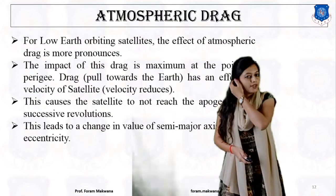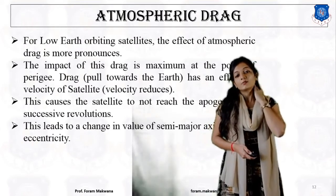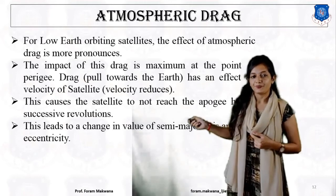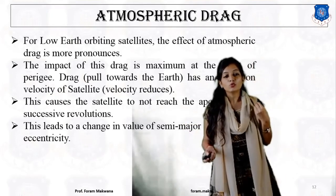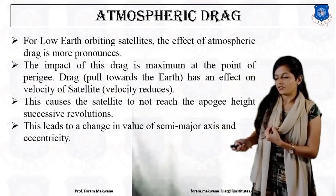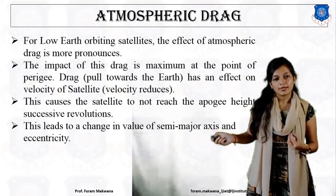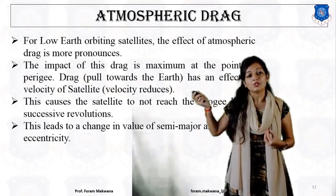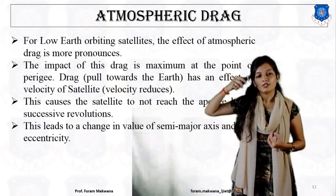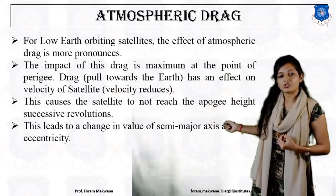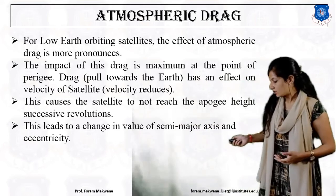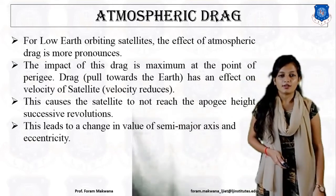Now, what is atmospheric drag? It is more pronounced for LEO. The impact of drag is maximum at the point of perigee — it causes a pull towards the earth that affects the satellite's velocity. At the perigee point, the velocity of the satellite is reduced because of atmospheric drag, causing the satellite not to reach the apogee height at successive revolutions, and resulting in changes to the semi-major axis and eccentricity.